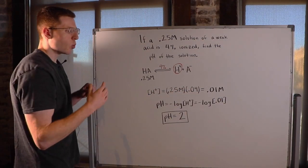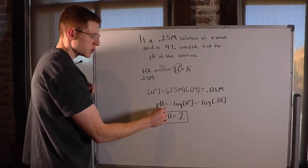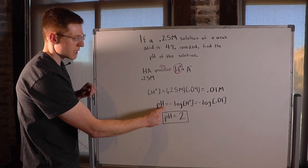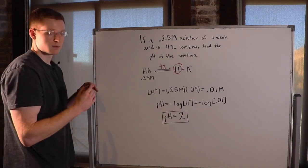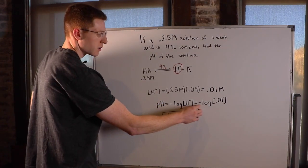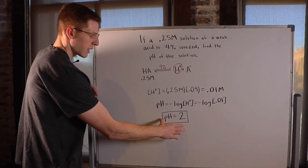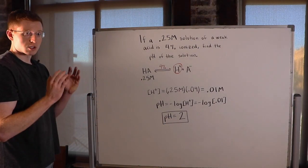You'll get 0.01 molar as your H-plus concentration, which you can then plug into this equation here, pH equals the negative log of the H-plus concentration. So you'll do negative log of 0.01, and on your calculator you will get pH equals 2.